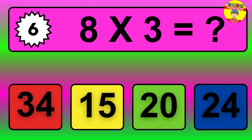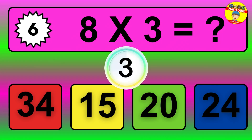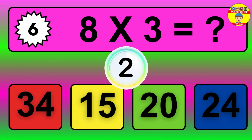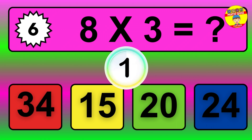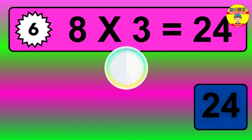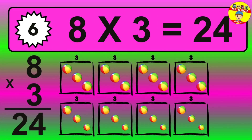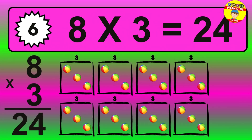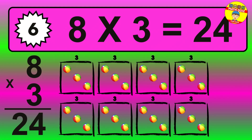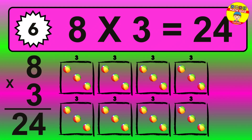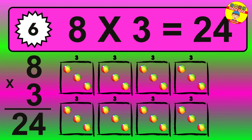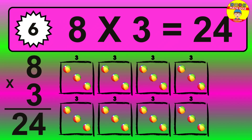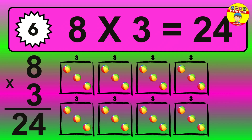Question 6. 8 times 3 equals what? The answer is 8 times 3 is 24. To calculate, we have 8 groups with 3 balls each one. So, how many balls do we have? 24 balls.